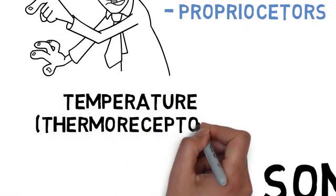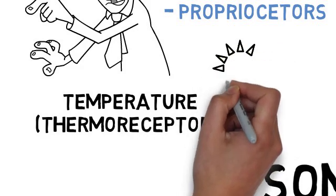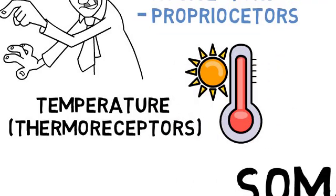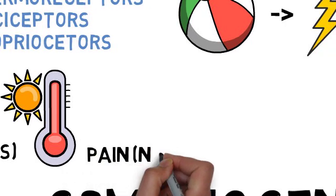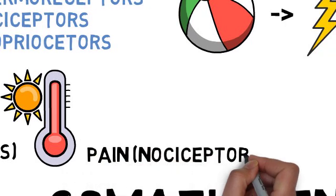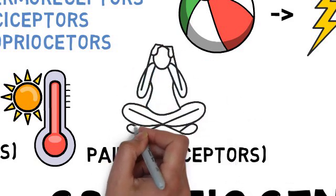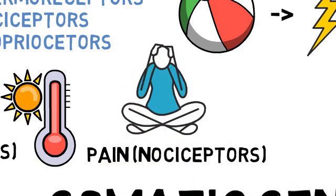Thermoreceptors detect temperature changes and send signals through sensory neurons to the brain, helping us distinguish between hot and cold. Nociceptors detect harmful stimuli, like a sharp object or extreme heat, and send pain signals to the brain, triggering a protective response.